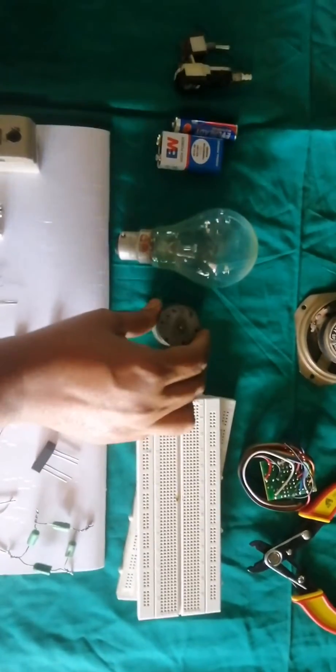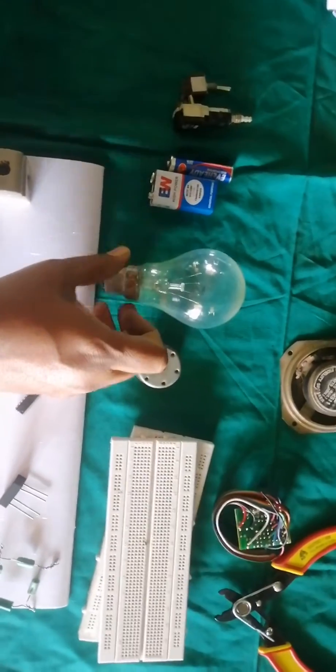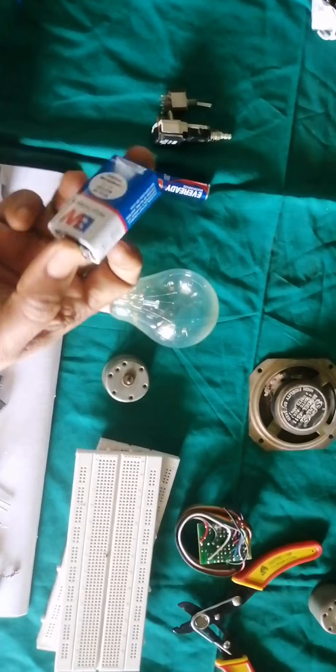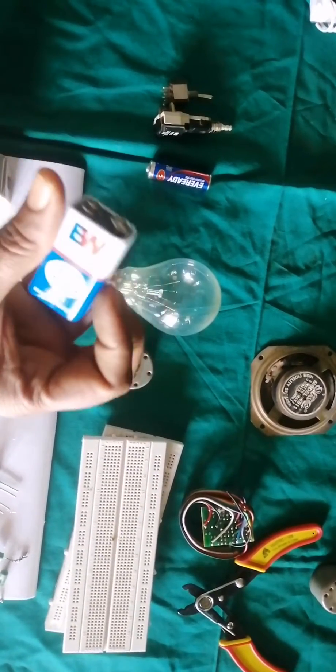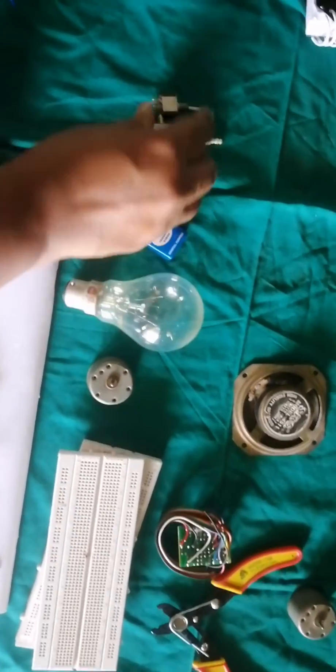This is a motor DC motor, this is bulb, these are cells because we also call it as a battery.